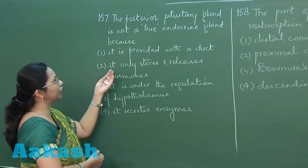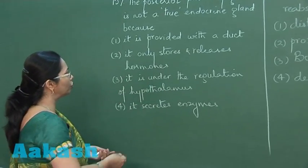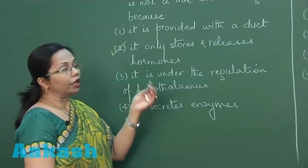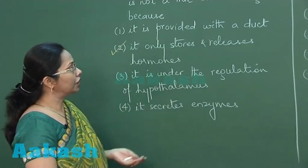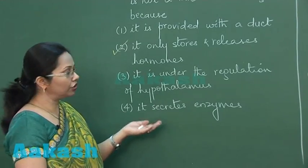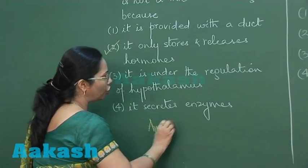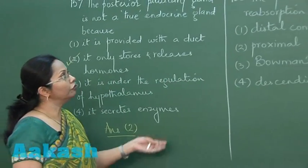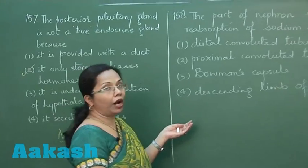Out of these choices, we can see it only stores and releases hormones, so that would be our correct choice. It is the anterior pituitary which is under the regulation of hypothalamus, and since it doesn't secrete enzymes, this is wrong. So our best answer is option number two.